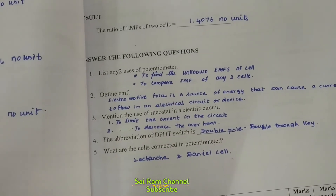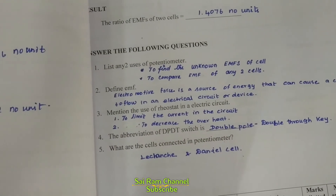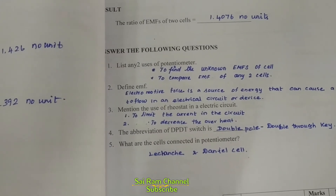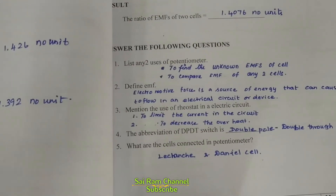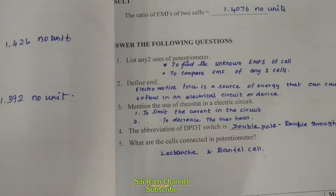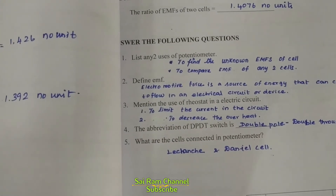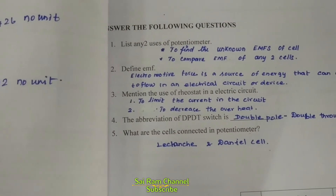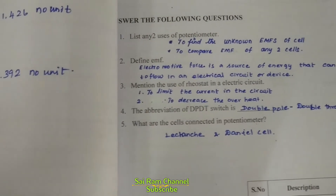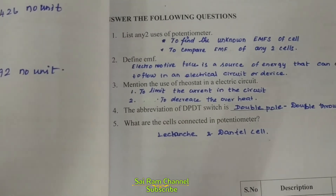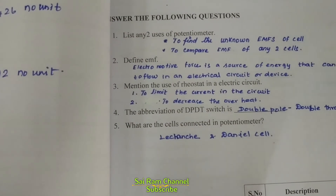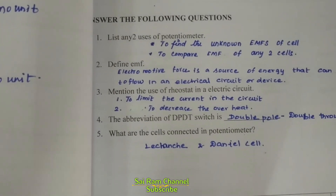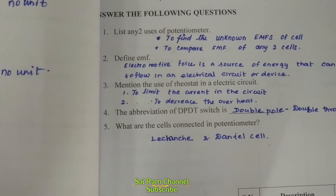To answer the viva questions: List 2 uses of the potentiometer — (1) to find unknown resistance, (2) to compare EMF of 2 cells. Define EMF: Electromotive Force is the force that drives electrons to produce current. The abbreviation DPDT stands for Double Pole Double Throw. The rheostat is used to vary current in the circuit.